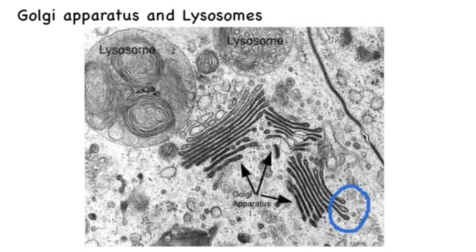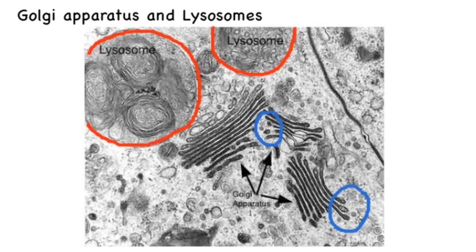Here we are able to identify the Golgi apparatus by its curved shape and by the vesicles circled in blue at the end of the tubules. We can also identify the lysosomes, which I'm circling in red, and relatively these are a little larger than the Golgi apparatus.